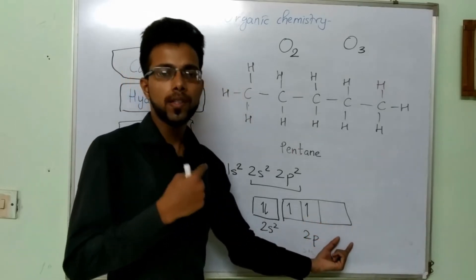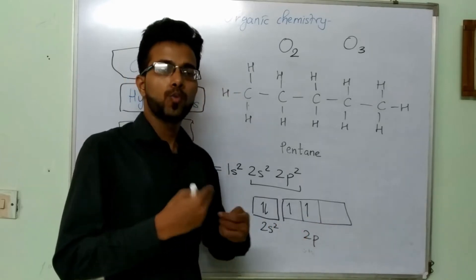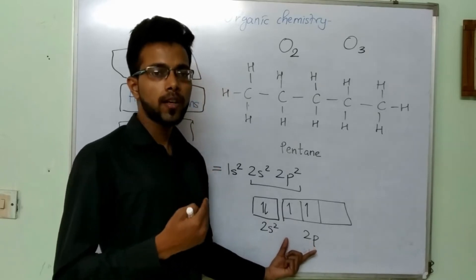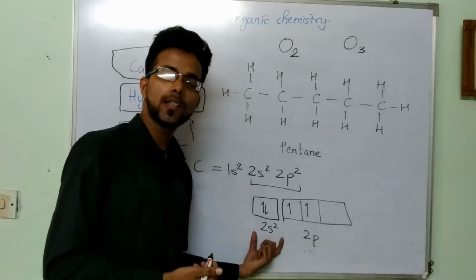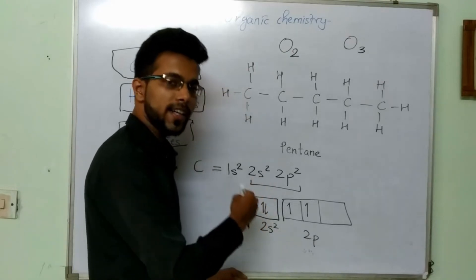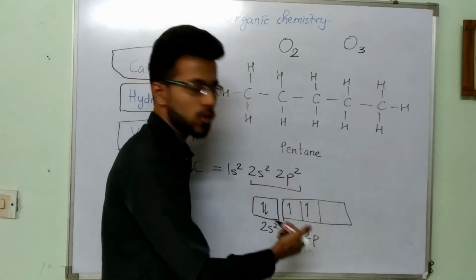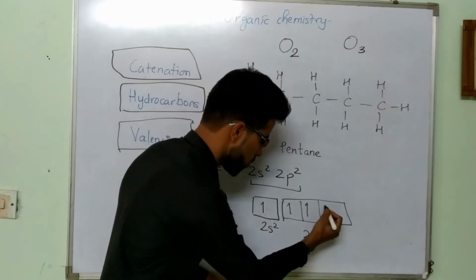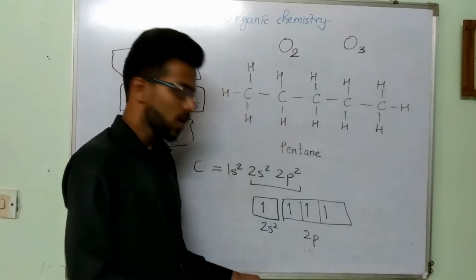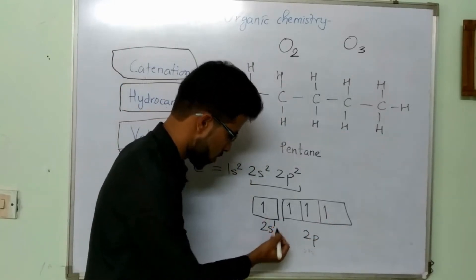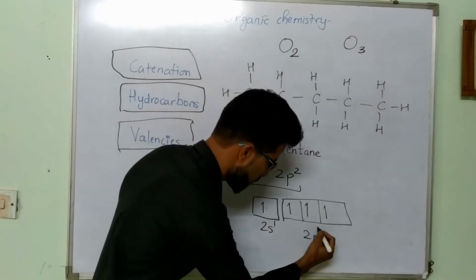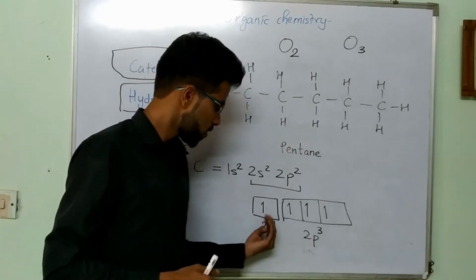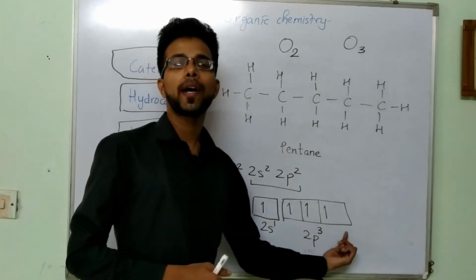When carbon has to form a bond, the second electron of 2s2 gets excited and jumps to the higher orbital — from 2s2 to 2p. So now it becomes 2s1 and 2p3. Now you can see that there are 4 unpaired electrons, and these 4 unpaired electrons need to be paired.